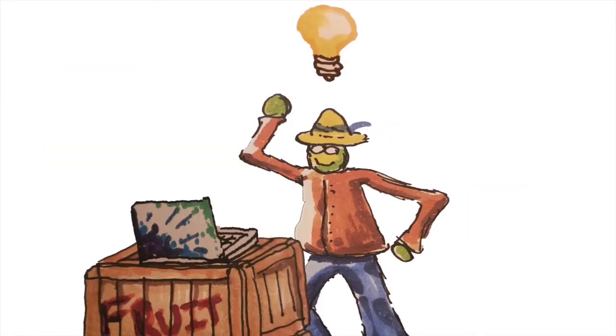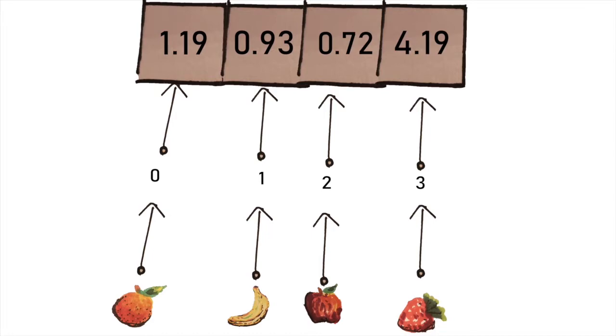But what if you could make one? If you could map each fruit to an array index, then you could store each price at the corresponding array index. Hash tables do just this, letting us look up and insert in O(1) time, on average and with amortization. In the rest of this video, we'll talk about how and why we need those caveats.